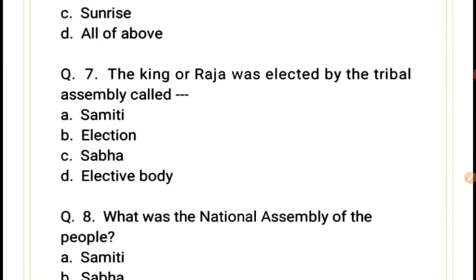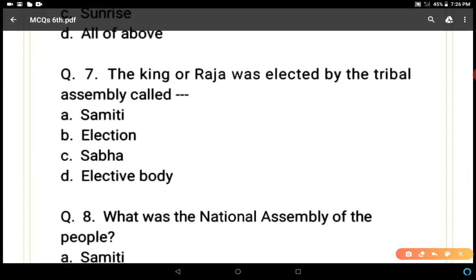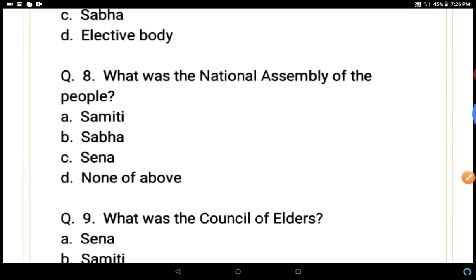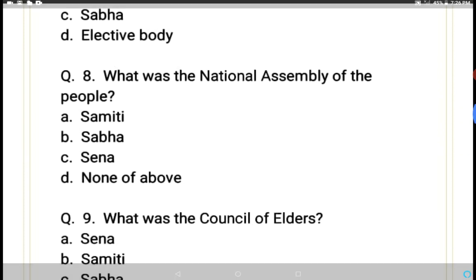Question 7: The king or raja was elected by the tribal assembly called what? Options: samiti, election, sabha, or elective body. This tribal assembly used to elect the king or raja. Samiti is the correct answer, option A.